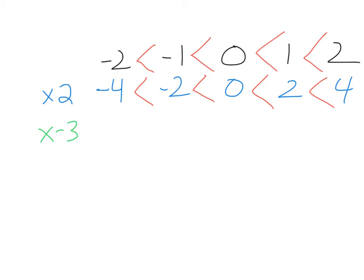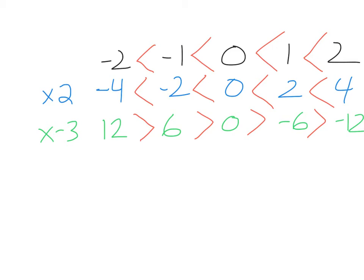But what if I multiply by negative 3? Negative 3 times negative 4 is 12, negative 3 times negative 2 is 6, negative 3 times 0 is 0, negative 3 times 2 is negative 6, and negative 3 times 4 is negative 12. Could I say 12 is less than 6? Obviously not. The inequalities have all flipped around. So when I multiplied by a negative number, the inequalities changed direction.